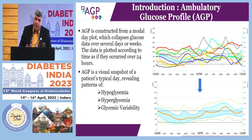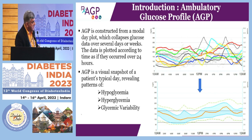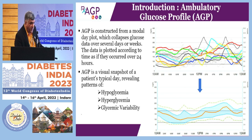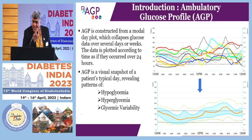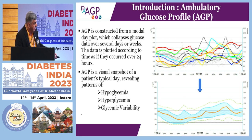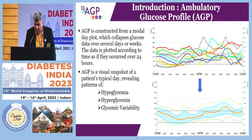Before heading to the advances, it's important that we understand the basics of AGP interpretation. It's a visual snapshot of a patient's typical day which will reveal hypoglycemia — that is glucose going below 70 — and hyperglycemia, with 180 as the cutoff. The recommended range for most people with diabetes, except in pregnancy, is 70 to 180. It will also give us an idea about the variability.